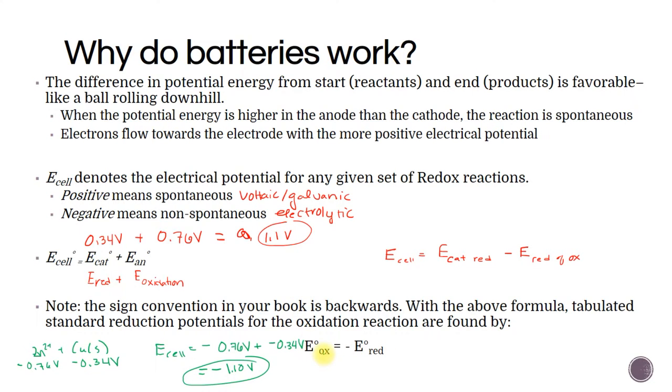So sometimes in other videos you might see or other textbooks or even some places in ours, what they're going to tell you to do is if you're adding E cat plus E an, then you have to flip the oxidation potential. So change that sign. If you use the equation like this, you don't change the sign. It's just a matter of whether you account for the negative in the equation or whether you do it in advance. I don't care which way you do it, but I highly recommend picking one method and sticking with it because if you go back and forth, you're liable to forget to flip that sign.